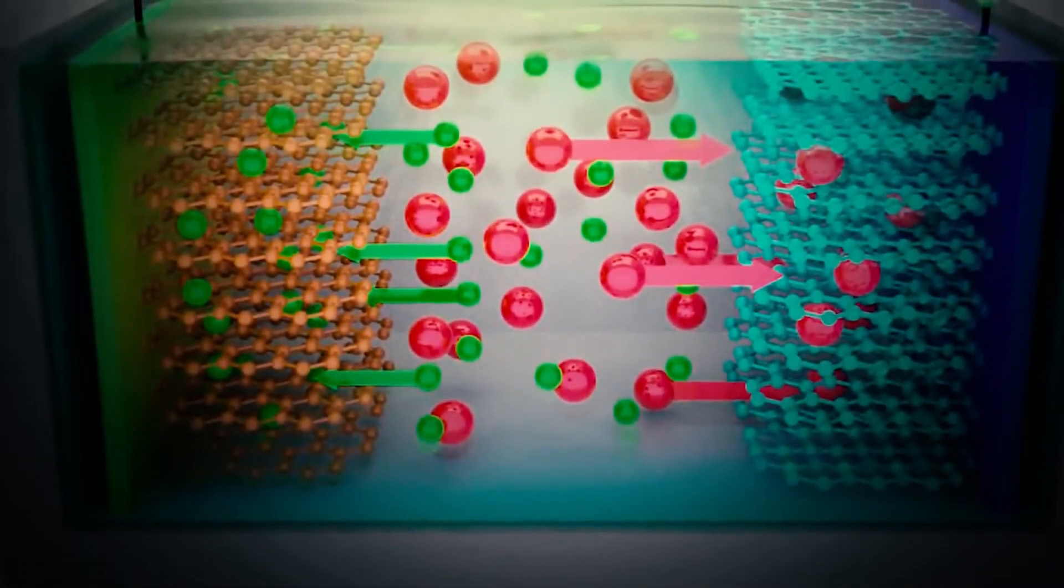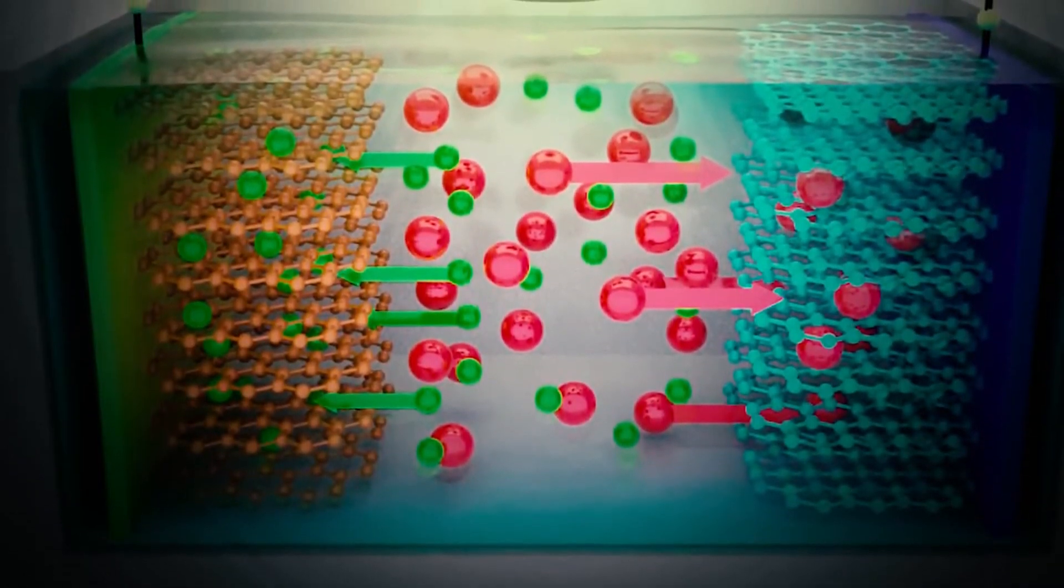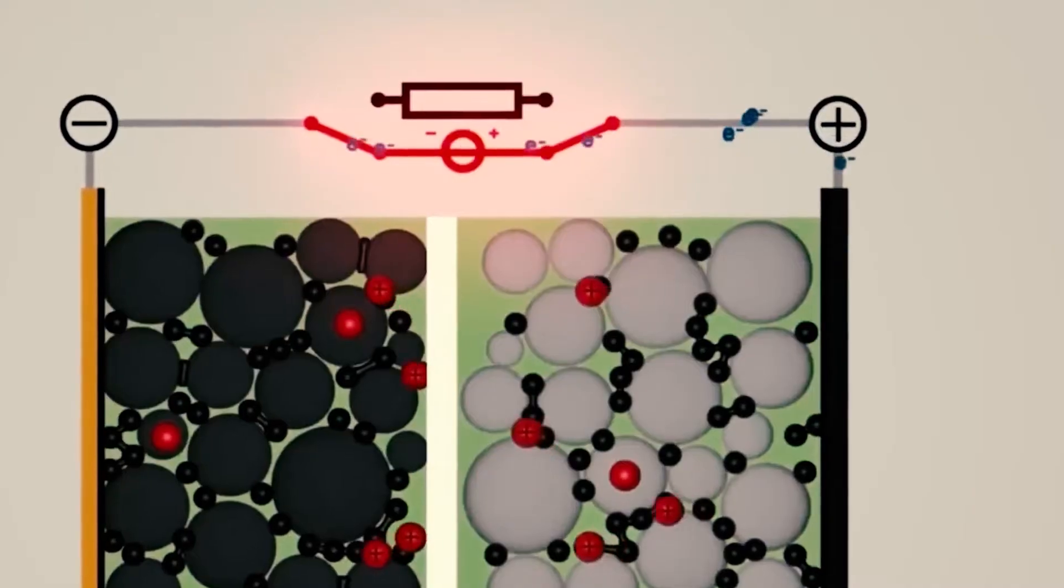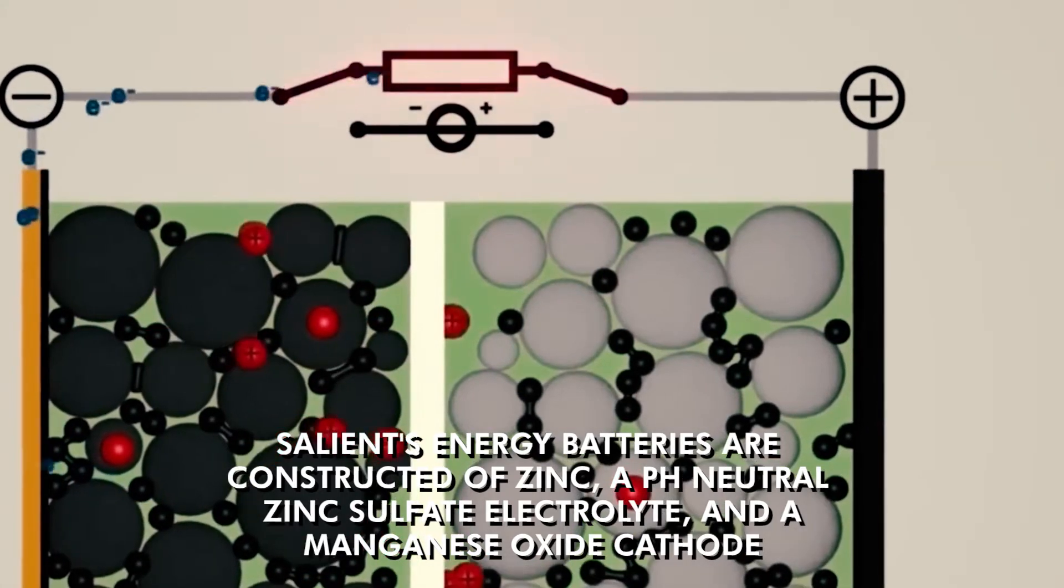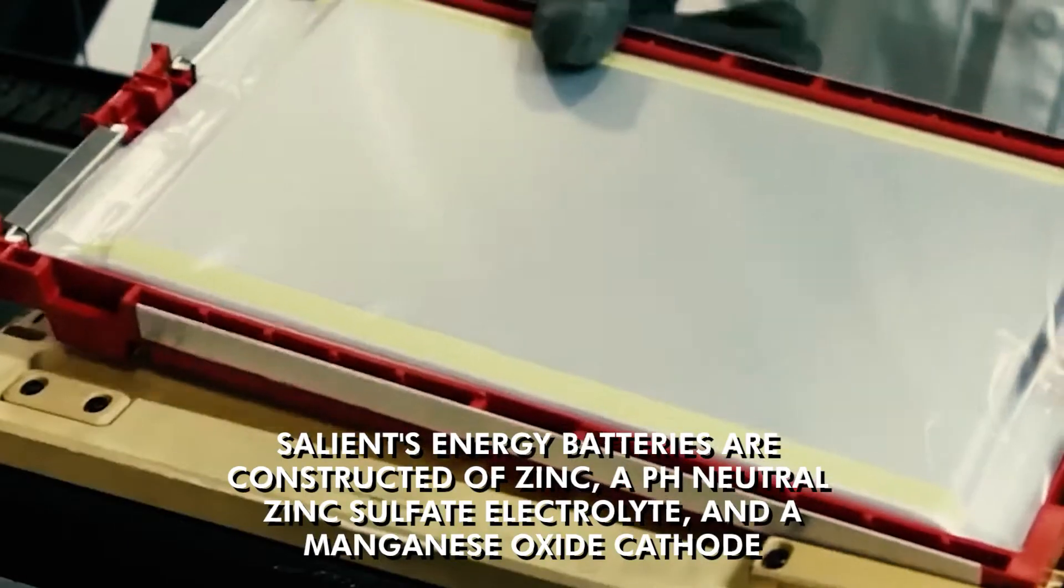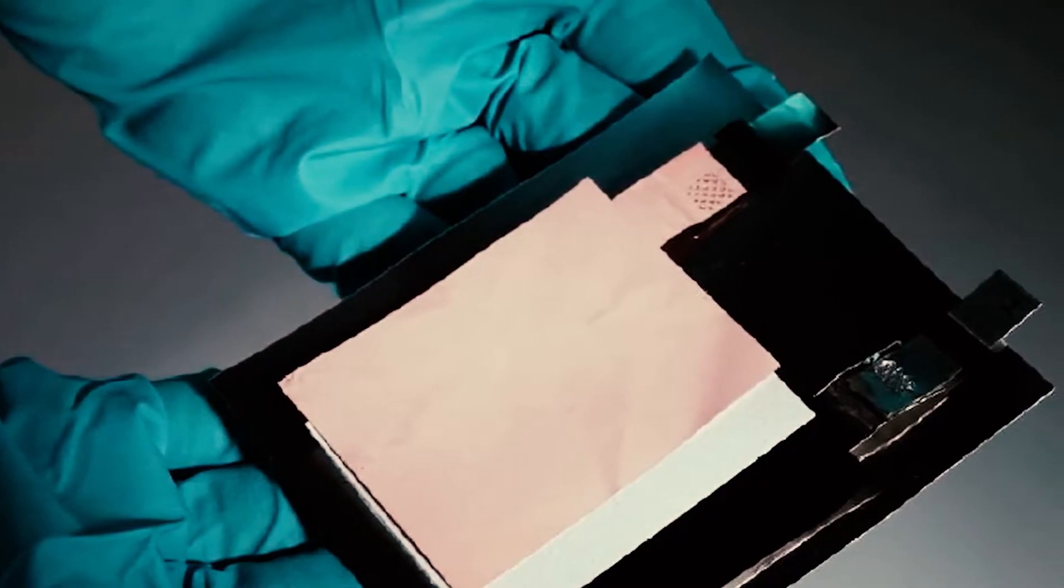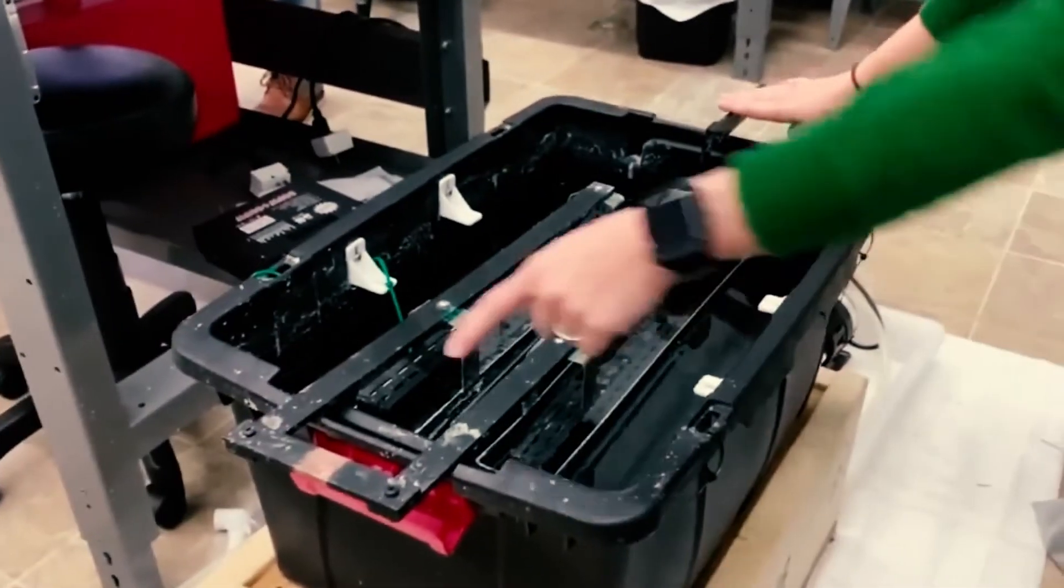Homeowners and builders have discovered how it may help them save money. That's what they're ecstatic about. Salient's energy batteries are constructed of zinc, a pH-neutral zinc sulfate electrolyte, and a manganese oxide cathode. This is less expensive than lithium-ion chemistry, as manganese is plentiful all around the globe.